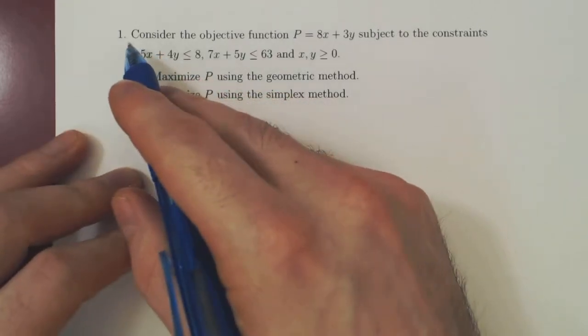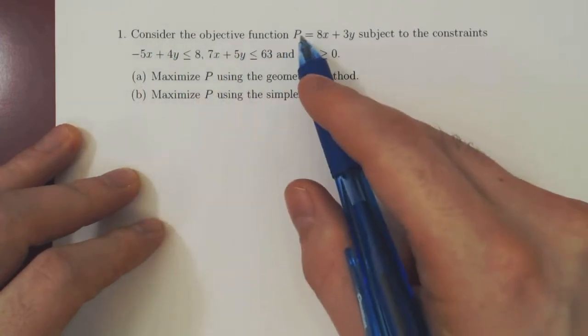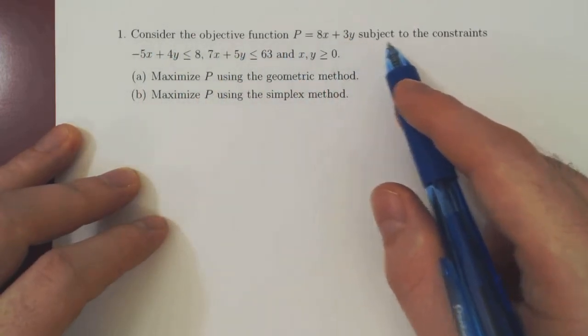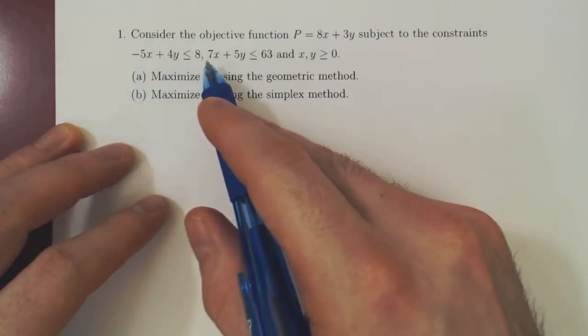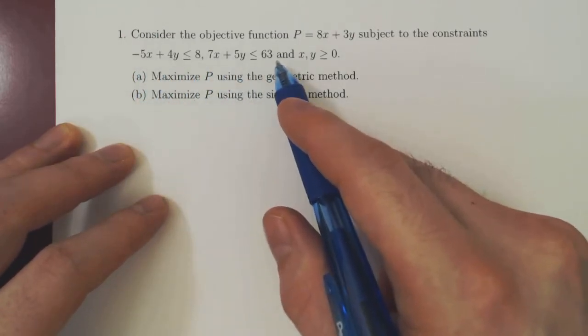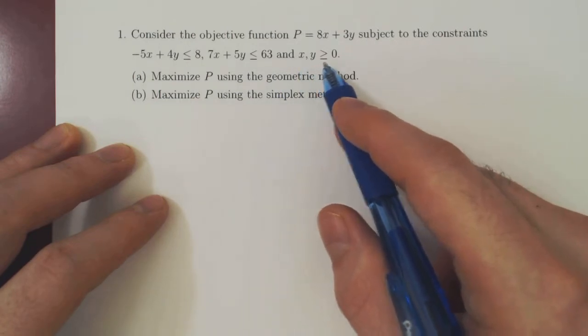Okay, so recall the problem. Consider the objective function P equals 8x plus 3y subject to the constraints: negative 5x plus 4y is at most 8, 7x plus 5y is at most 63, and both x and y are non-negative.